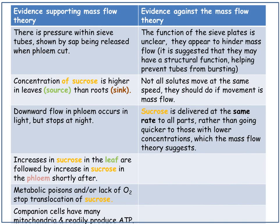In summary, evidence supporting mass flow includes: pressure within sieve tubes shown by sap release when phloem is cut; higher sucrose concentration in the source than the sink; phloem flow occurring in light but stopping at night; sucrose increases in the leaf being followed by increases in the phloem; and metabolic poisons or lack of oxygen stopping translocation while companion cells produce ATP. Evidence against includes: sieve plates appearing to hinder mass flow; not all solutes moving at the same speed; and sucrose being delivered at the same rate to all parts rather than faster to lower-concentration areas.